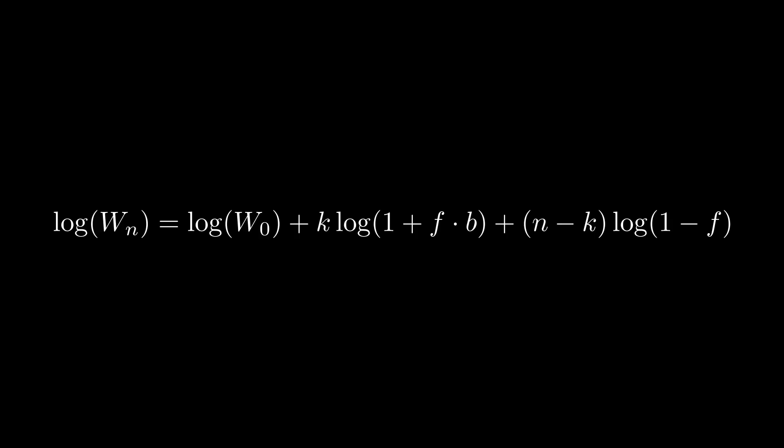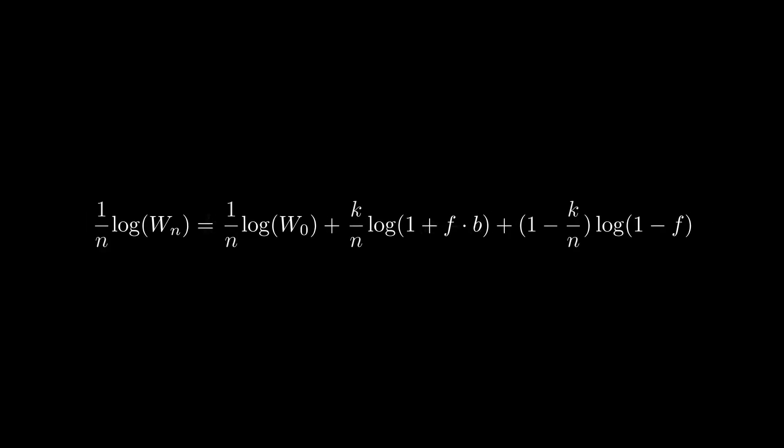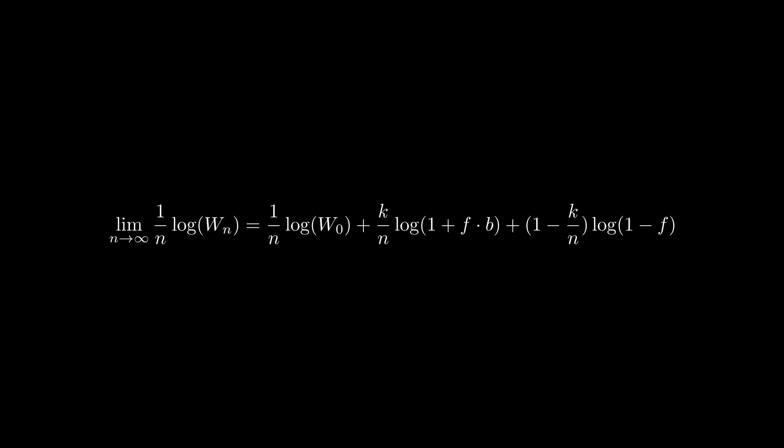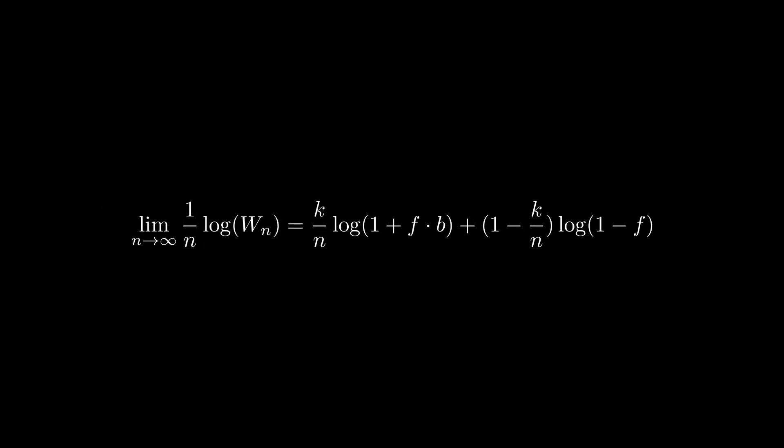What we want to figure out, though, is the bet we should place on each individual step. Therefore, we take the average of that growth by dividing it by the number of total bets to make. And since we're looking at the long game here, involving a big amount of bets, the whole formulation simplifies further to our equation for logarithmic growth.